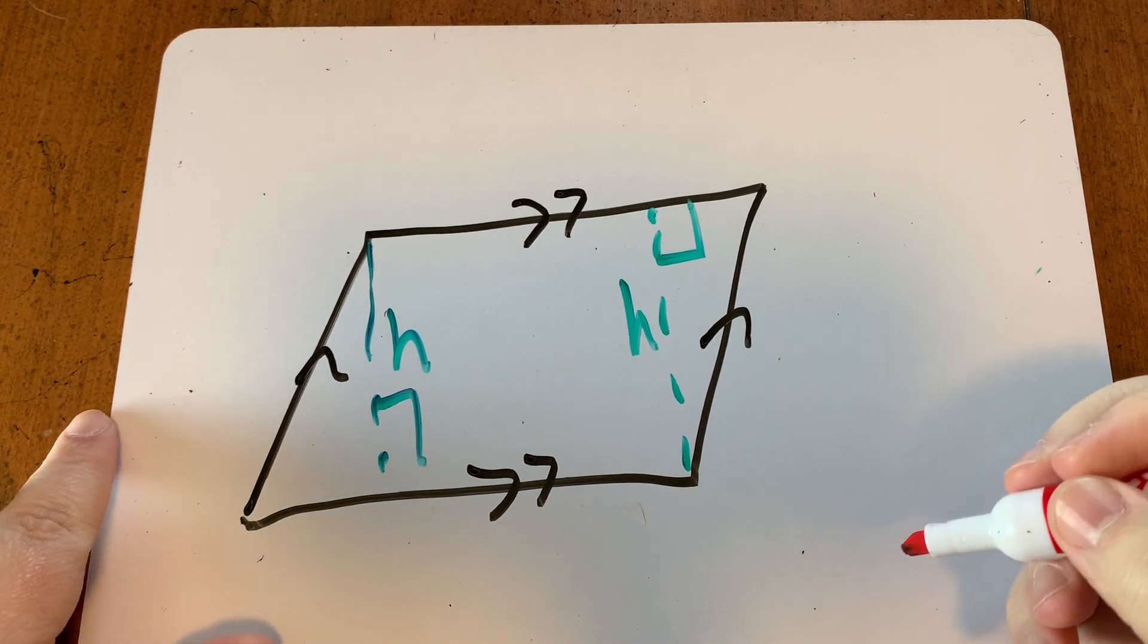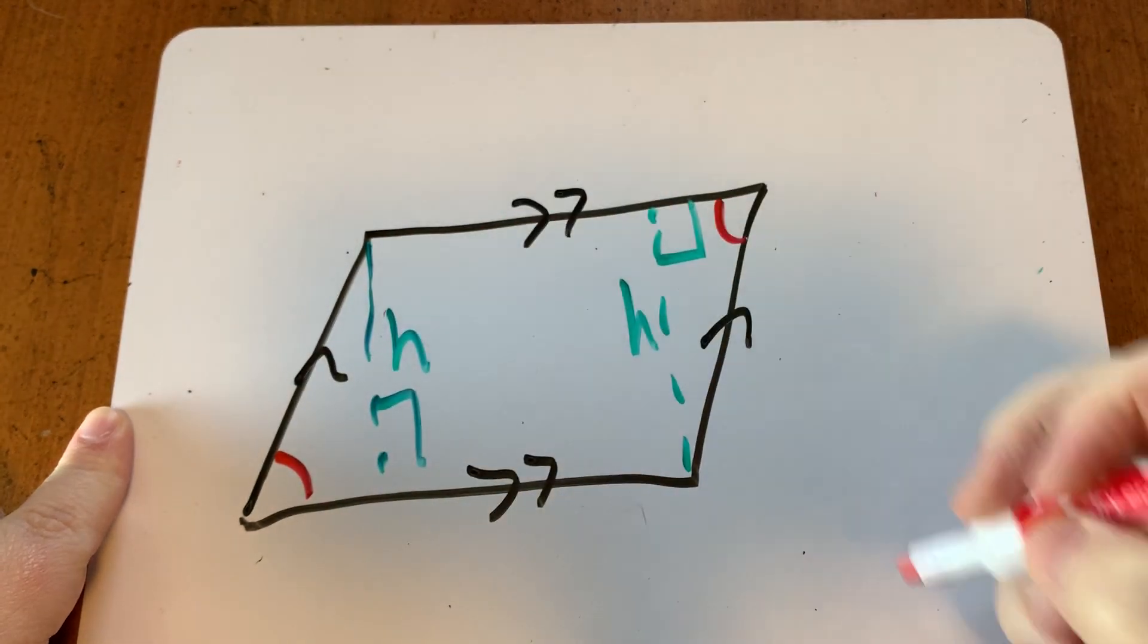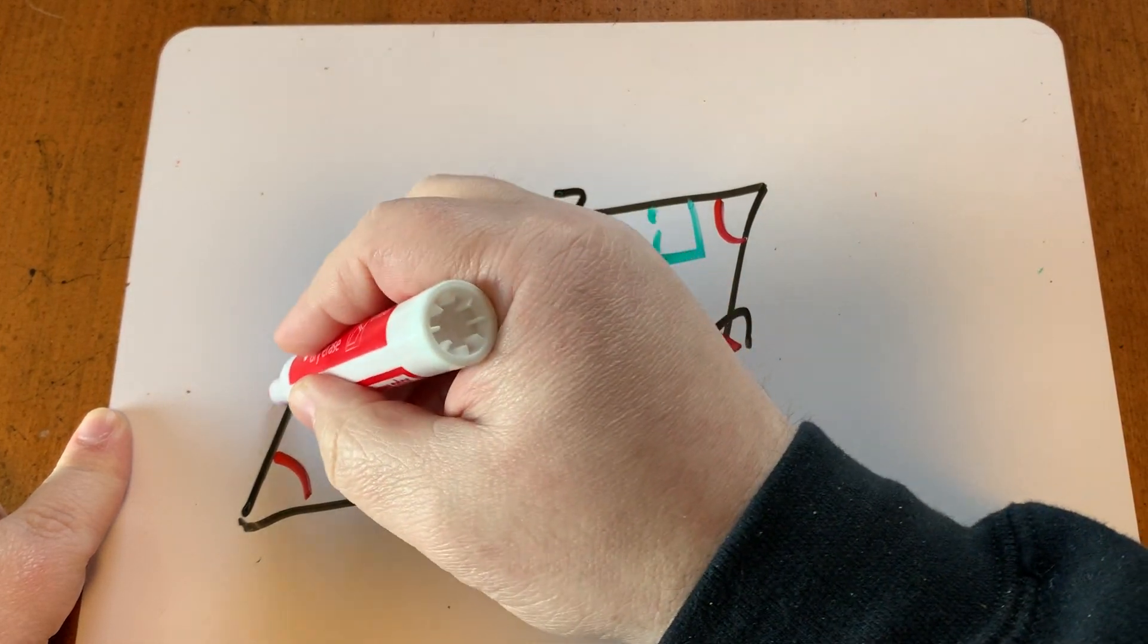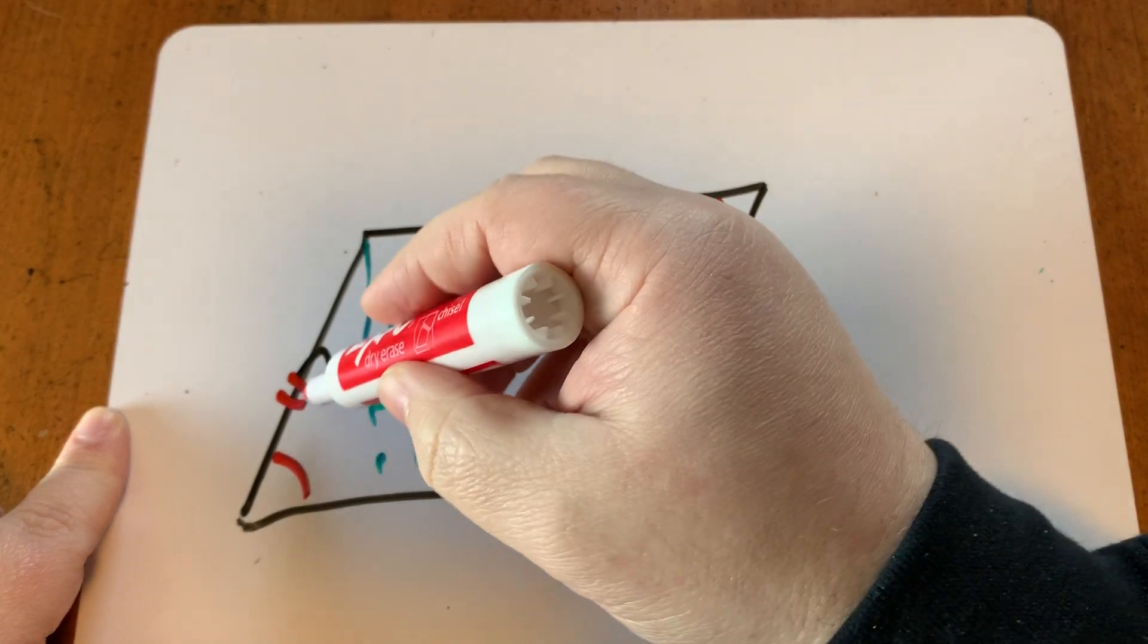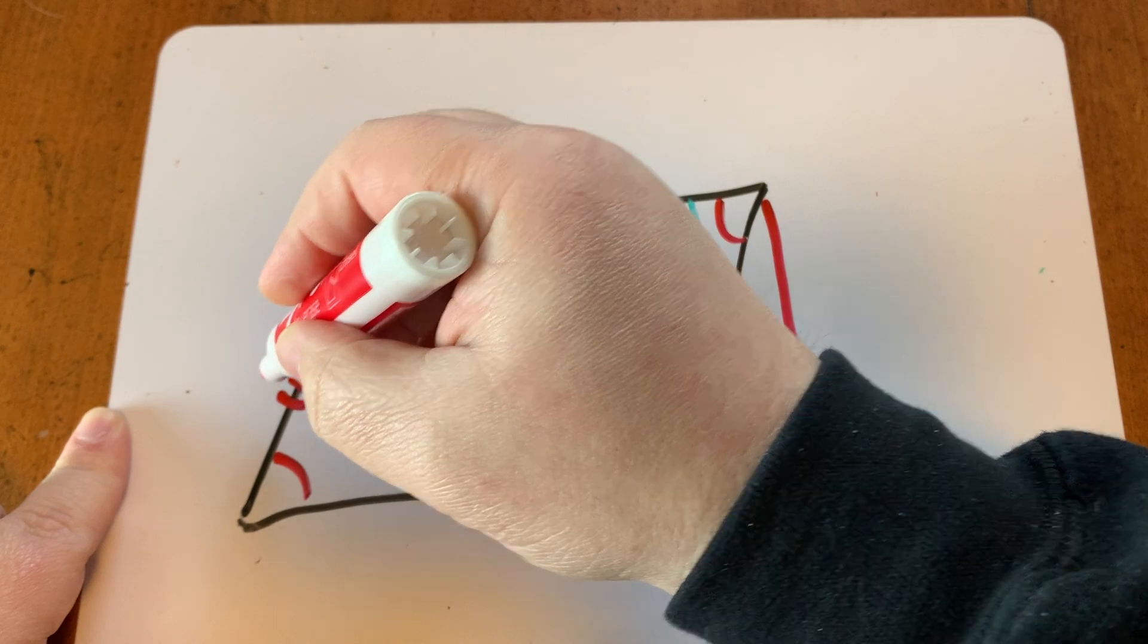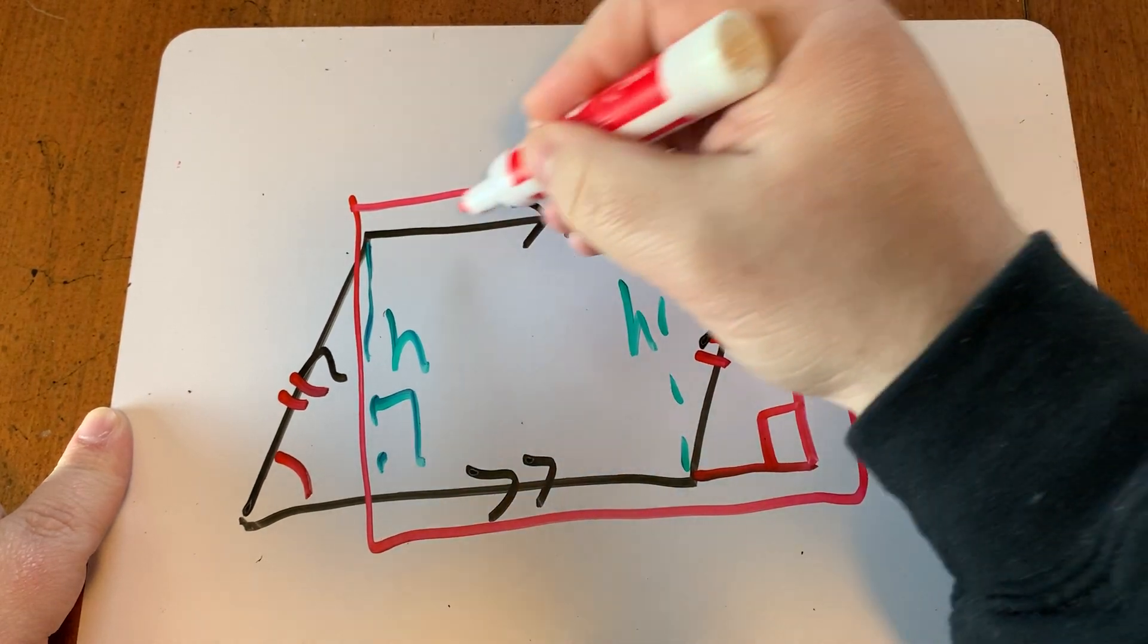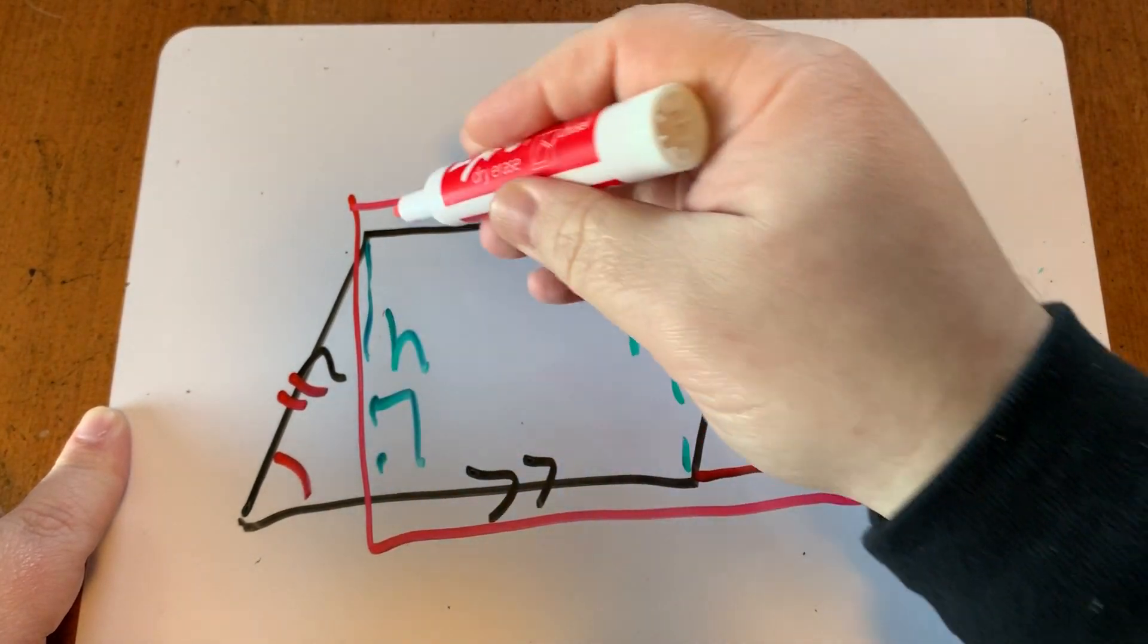Other things are congruent. That angle is congruent to that one. So these two triangles are congruent to each other. This smaller triangle would have the same area as that smaller triangle, and those right triangles would have the same hypotenuse. What we can do is we can take that right triangle and move it over here. That gives us a rectangle.